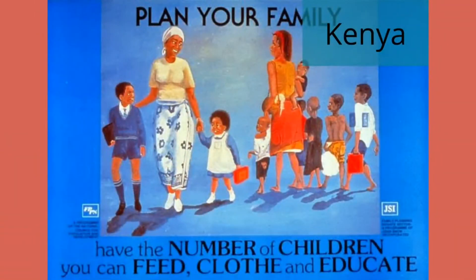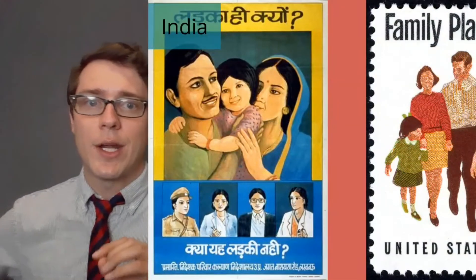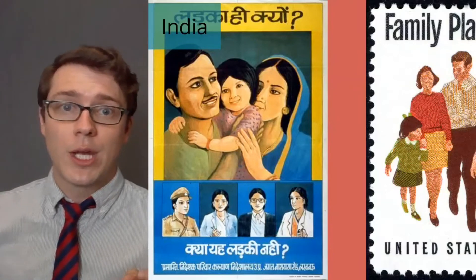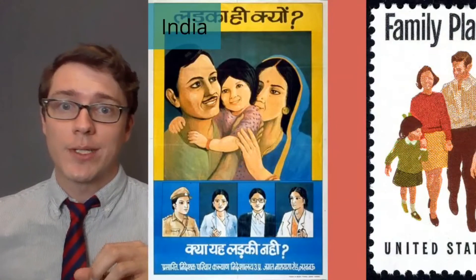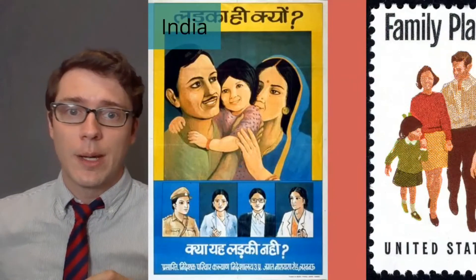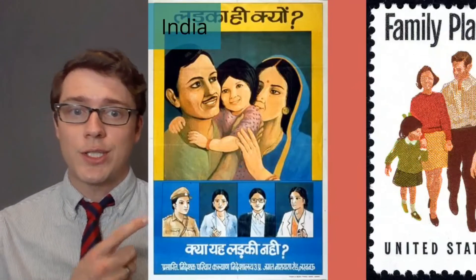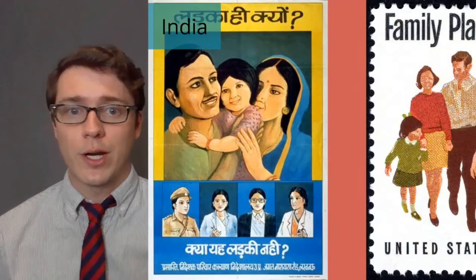In Kenya, we see them saying 'have the number of children that you can feed, clothe, and educate,' showing a mom with two kids who are more successful and happier than a family with many children. And in India, we see a campaign to normalize having female children. It was preferred for a long time to have male children because they thought they would take care of the parents as they got older. This ad shows that if you just had one child and she was female, she still has great options for careers in life.